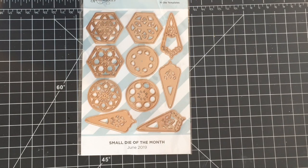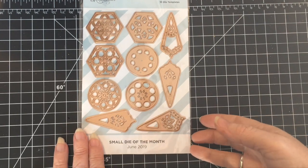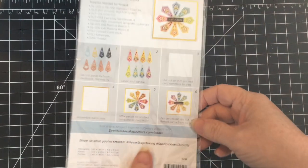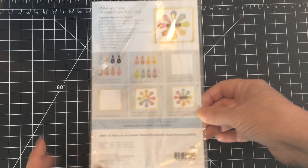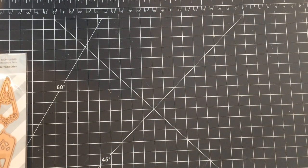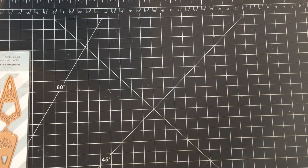Hi everyone, it's Cindy here from Hooked on Crafts, and today I'm going to be sharing a few cards that I made using Spellbinder's Small Die of the Month for June 2019. The name of this die was called Kaleidoscope Trio, and I hope you enjoy the cards that I made.